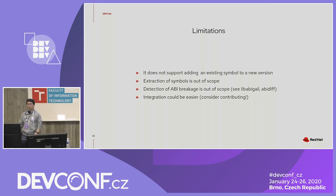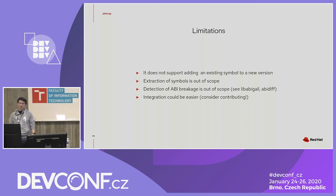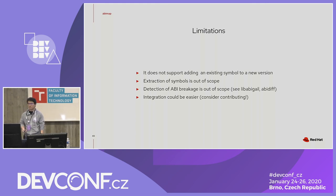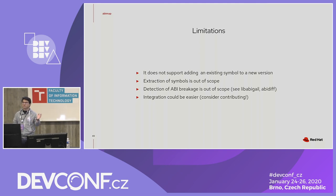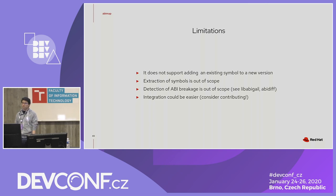The tool has some limitations. It doesn't support adding an existing symbol to a new version, which is required to keep two versions of the same API — this is an improvement I need to make. Extraction of symbols is out of scope, so you need a way to parse your source code and provide the symbols to be exported. Detection of ABI breakage is also out of scope — the tool only checks if you are removing symbols. If you really want to check whether ABI is being broken, I strongly recommend the Libabigail or ABI diff tool. Integration of the two could be easier, so please consider contributing.